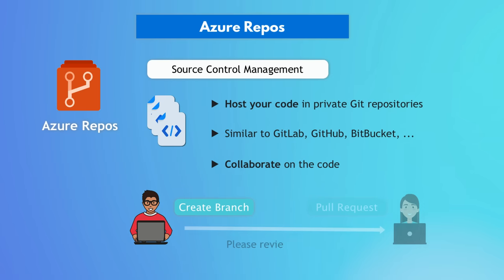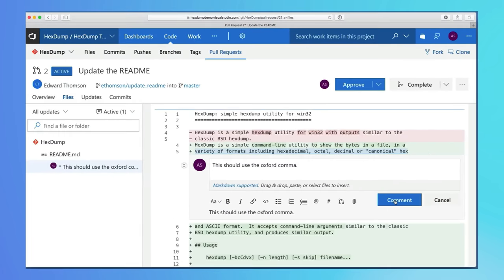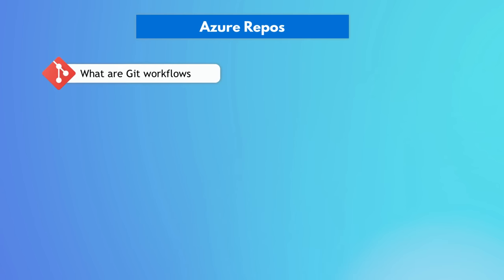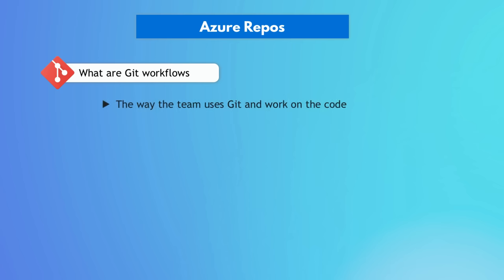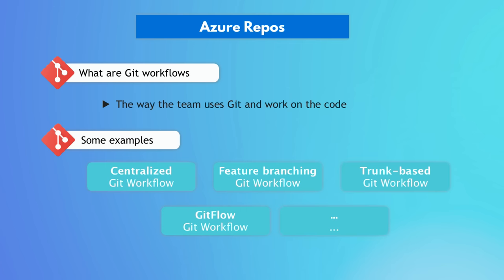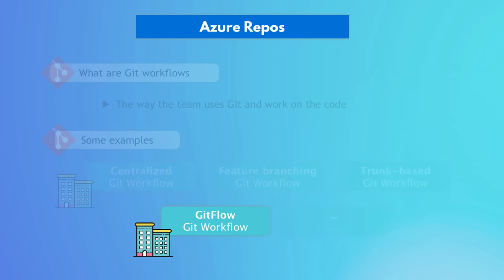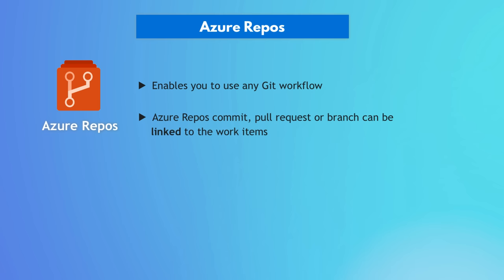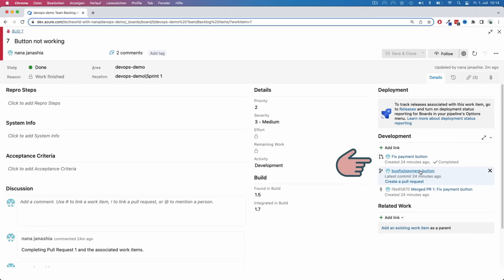When developers start a task, they create a temporary branch. When done, they create a pull request, and other developers can review and comment on it. They can communicate and collaborate until the pull request is good enough to be merged into the main branch — this is what's called a Git workflow. With Azure Repos, you have the tool that enables you to implement whatever Git workflow you choose. Plus, the repository, branches, and pull requests are all linked back to the feature task, so you can see the activity and status of development there as well.